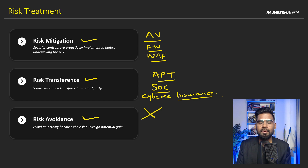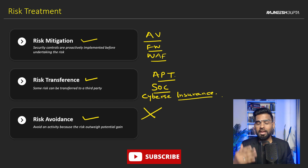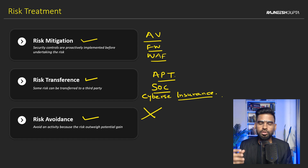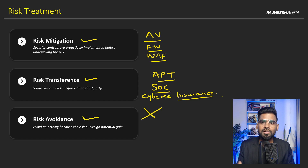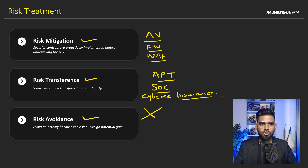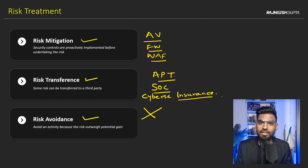A real-world example: a manufacturing or chemical plant might decide not to use certain hazardous materials or chemicals due to the danger of handling or storing them on the premises — that is risk avoidance. Another example is an organization limiting the type of customer data it stores on its computers in case of a cyber attack, choosing to store it elsewhere or not store it at all.